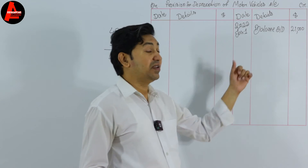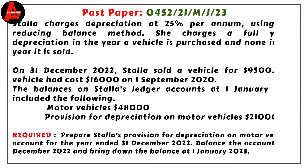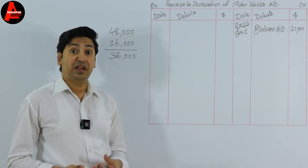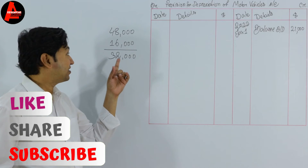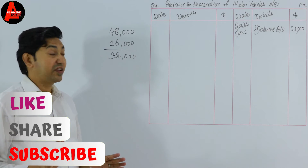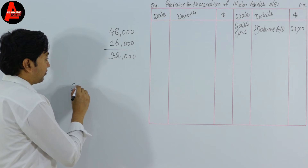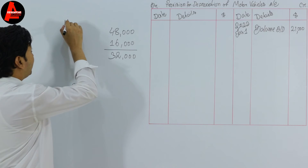We cannot simply subtract the full $21,000 provision for depreciation from $32,000, because the depreciation on the disposed vehicle is included within that $21,000. The vehicle that was sold had a cost price of $16,000, and we need to extract its accumulated depreciation before calculating the current year's charge.